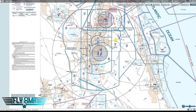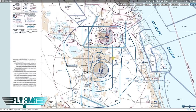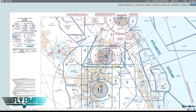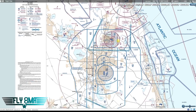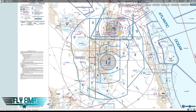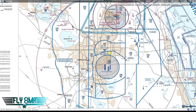A flyway chart — or flyway chart rather — is a planning chart for VFR pilots to navigate around Class B airspace more effectively. When planning your VFR flight, you want to look at the TAC chart, the sectional chart, and the flyway chart together to make the best decision on what route you're going to fly.